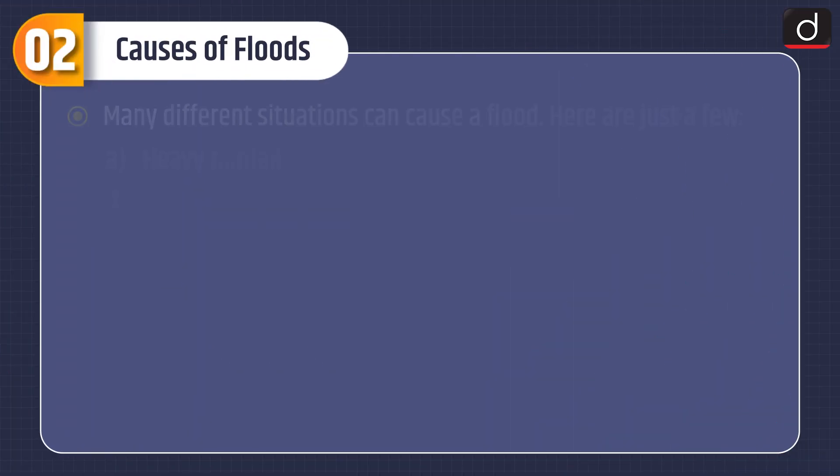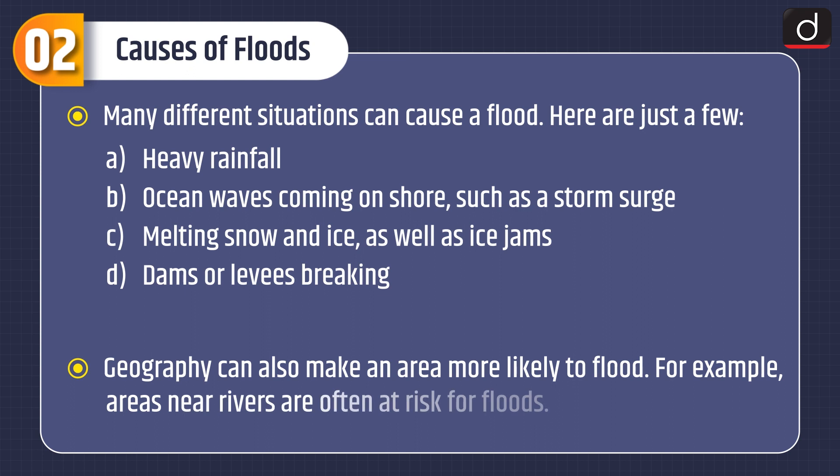Many different situations can cause a flood. Here are just a few: heavy rainfall, ocean waves coming onshore such as storm surge, melting snow and ice, ice jams, and dams or levees breaking. Geography can also make an area more likely to flood — for example, areas near rivers are often at risk.